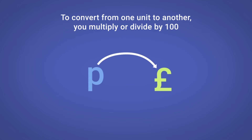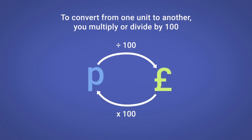To convert pence to pounds, divide by 100. To convert from pounds to pence, multiply by 100.